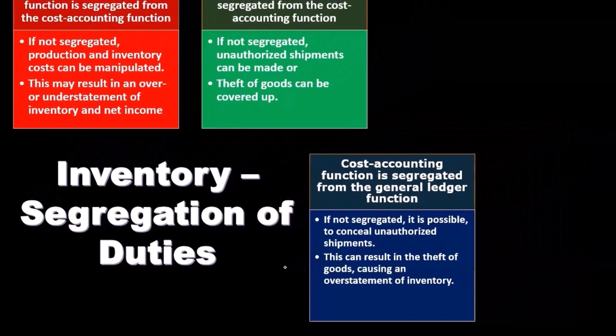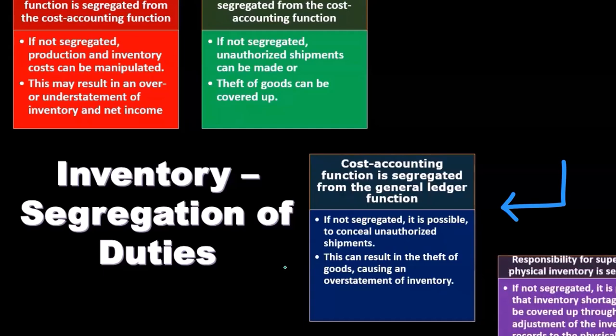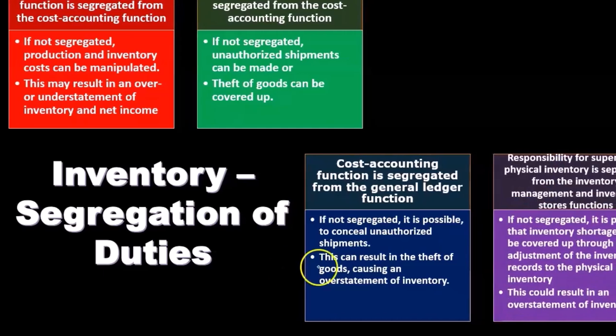So the cost accounting function is separated from the general ledger function. If it wasn't, it is possible to conceal unauthorized shipments, which can result in the theft of goods causing an overstatement of inventory.